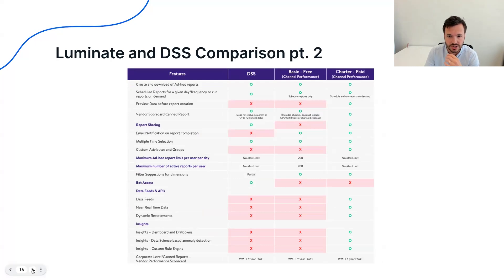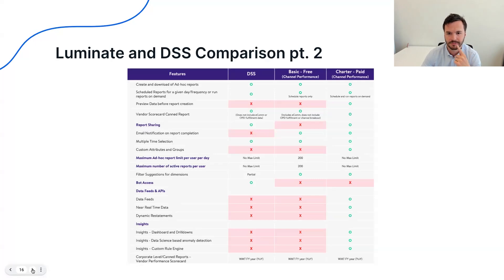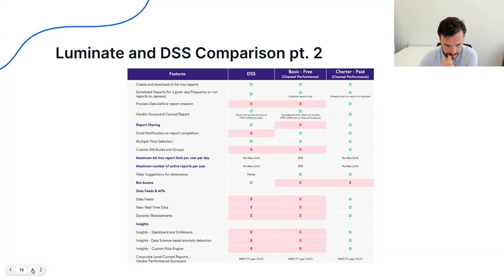Report sharing is a lot easier in Charter than it is in Basic, and a lot easier in Basic than it was in DSS. There are also no report limits in Charter — Walmart is trying to incentivize bigger suppliers to pay for Charter. Bot access, which was available in DSS, is now no longer available in Luminate. The data feeds and APIs can sort of function in a similar way to bots, depending on what you were using those bots for — you can use APIs to pull data automatically and send it off to a different program or app. That's why data feeds and APIs comes immediately after the bot access notification.